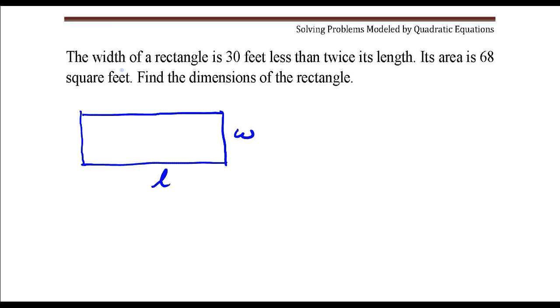If you read the first sentence, the width of the rectangle is 30 feet less than twice its length. So width is 30 feet less than twice its length, 2 times its length minus 30.